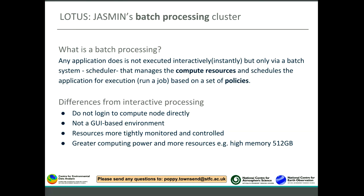On interactive sci machines, there's no control — everyone uses resources freely, and the sci machine can crash because someone was using a lot of multi-threaded processes or a task using a lot of memory, impacting others. The sci machine's memory is only 32 gigabytes, shared among many users. That gives you the key difference between interactive and batch processing.